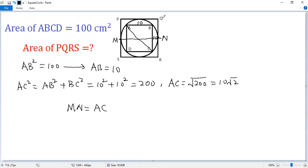So MN equals AC. But you see, MN equals the side length PQ, right? So PQ equals MN, and AC equals 10 times square root of 2.